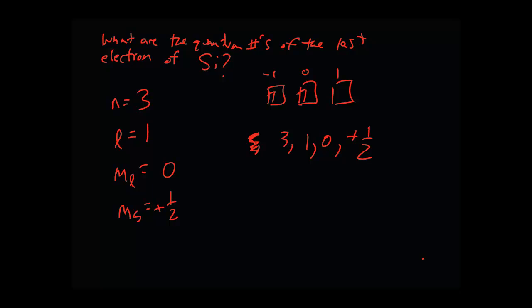All right. So let's try something like, what are the quantum numbers of the last electron in tungsten? OK, first one is n.